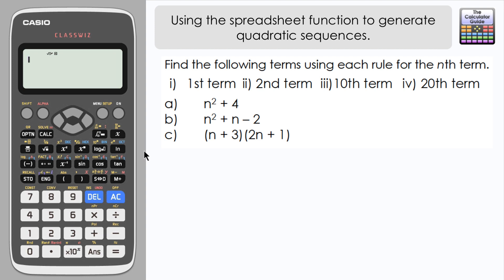So let's start off with n squared plus 4. Now we need to access spreadsheet mode, so I'm going to press menu and then navigate to spreadsheet or press 8, press equals, and here we are in spreadsheet mode.